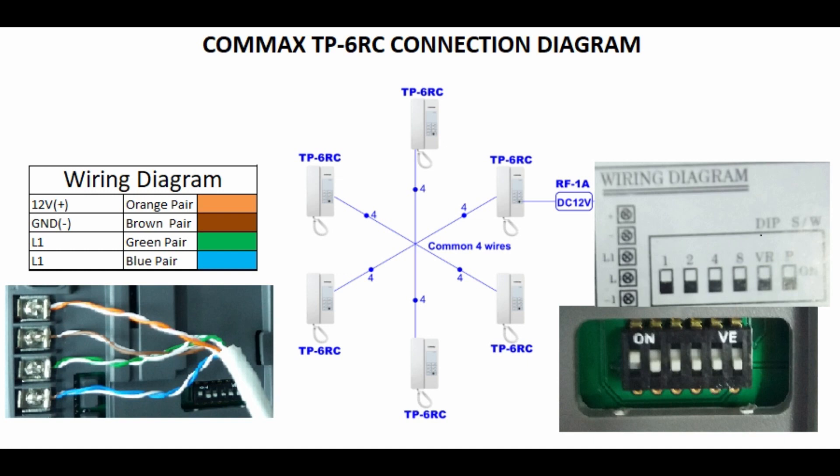I hope you guys got an idea about the numbering system and how we can give different numbers to each audio door phone station. So we can make it number one for the first station, number two for second station, three for third station, and so on. You can mark each station like one, two, three, four, five, six.